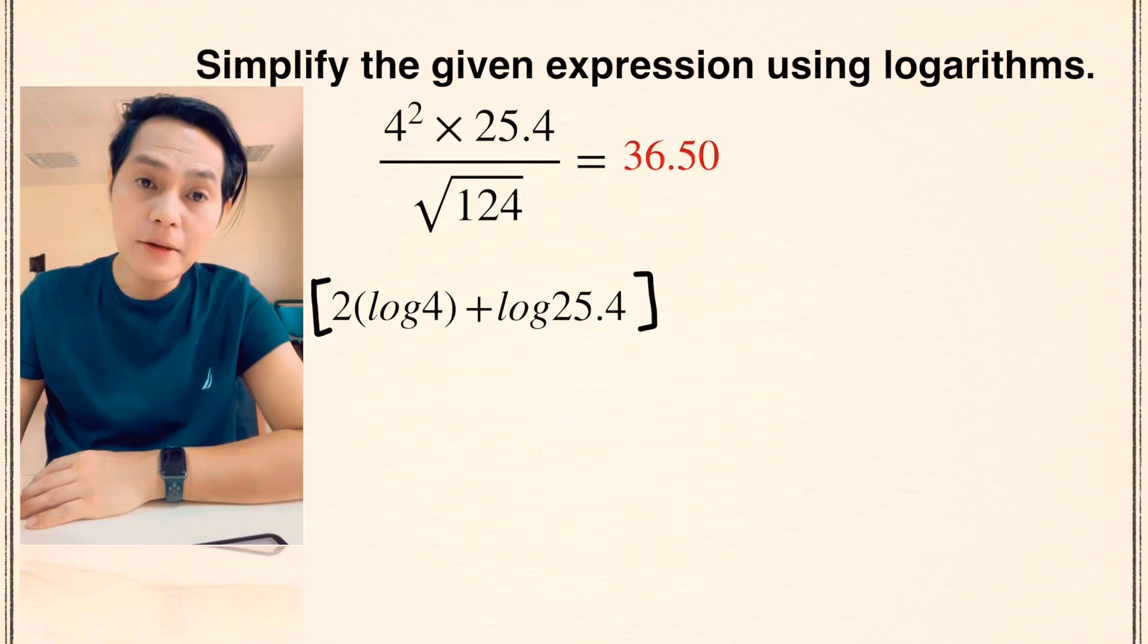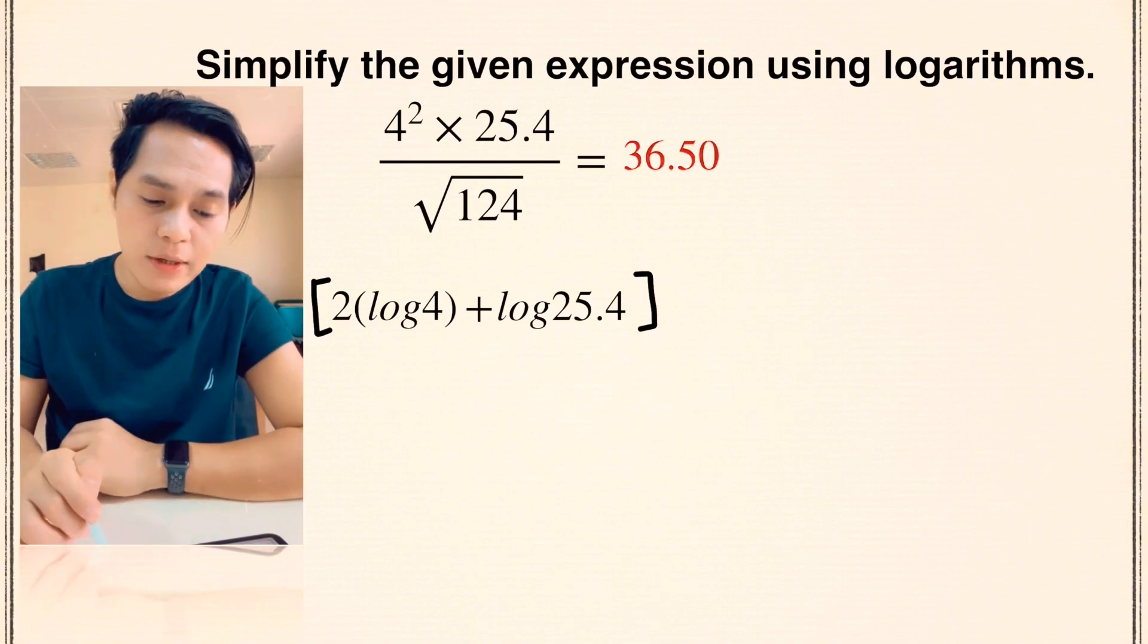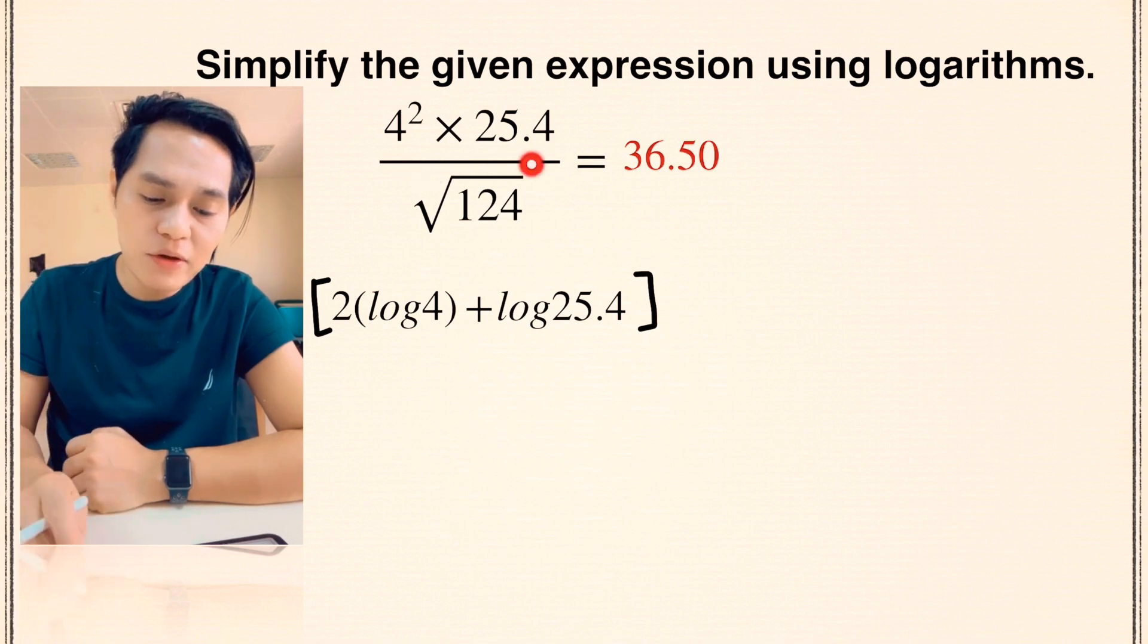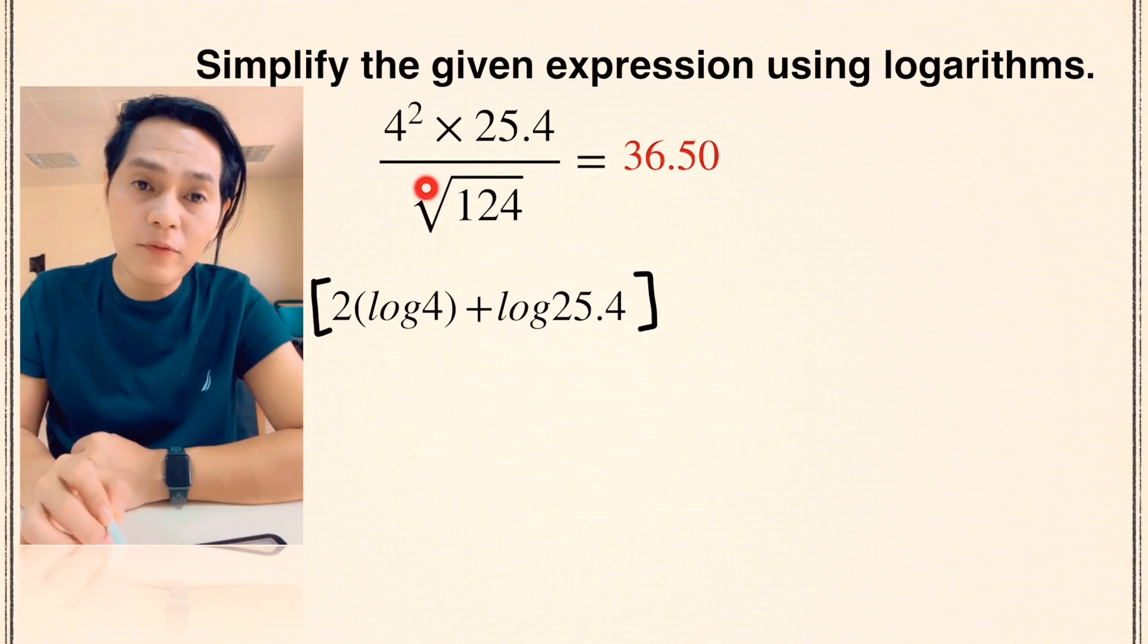The next thing to do is to work on the denominator. Since it's division, the inverse for that, if it's division then you are going to subtract it. So you are going to subtract the denominator but look at the denominator here. It's the square root of 124 and this square root of 124 is also expressed in the form 124 to the power of 1 half.